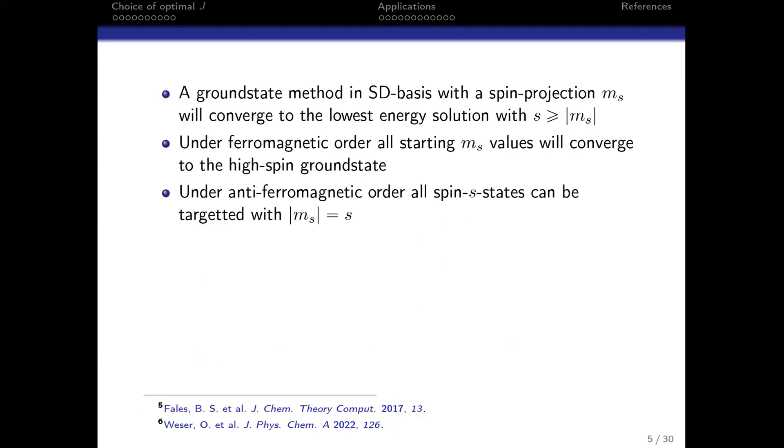If you have a ground state method in Slater determinant basis and you're starting with a given spin projection m_s, you will converge to the lowest energy solution with a large or equal s value in absolute value. That means if you have ferromagnetic order, any starting guess will converge to the high spin ground state. If you have anti-ferromagnetic order, you can directly target specific spin pure states.